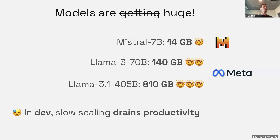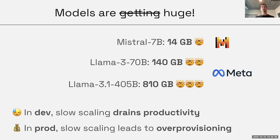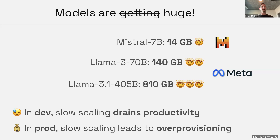This is a really big obstacle, and I'm sure many people have experienced the pain of waiting for weights to download and load before testing in development or serving in production. In development, slow scaling drains productivity — waiting minutes for things to spin up wastes your time. In production, this can lead to over-provisioning, because if you can't upscale quickly to respond to increased traffic, you need extra resources in steady state, and it's very expensive to have GPUs sitting around idle.